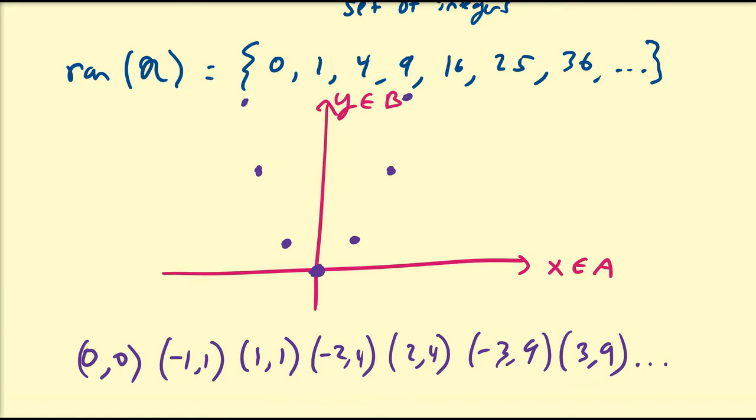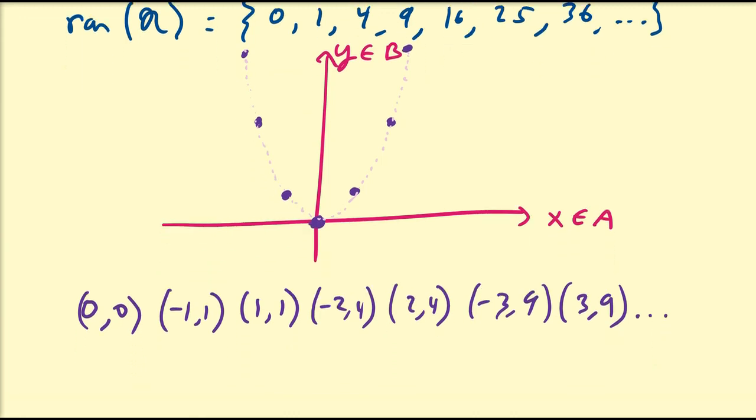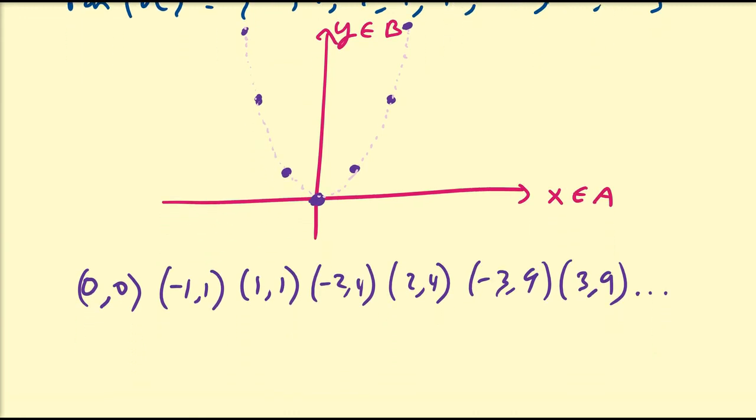So if we look at this graph, we might be able to see that this is going to be the graph of a U if we connect these points together. But of course, the graph of R is a discrete curve.